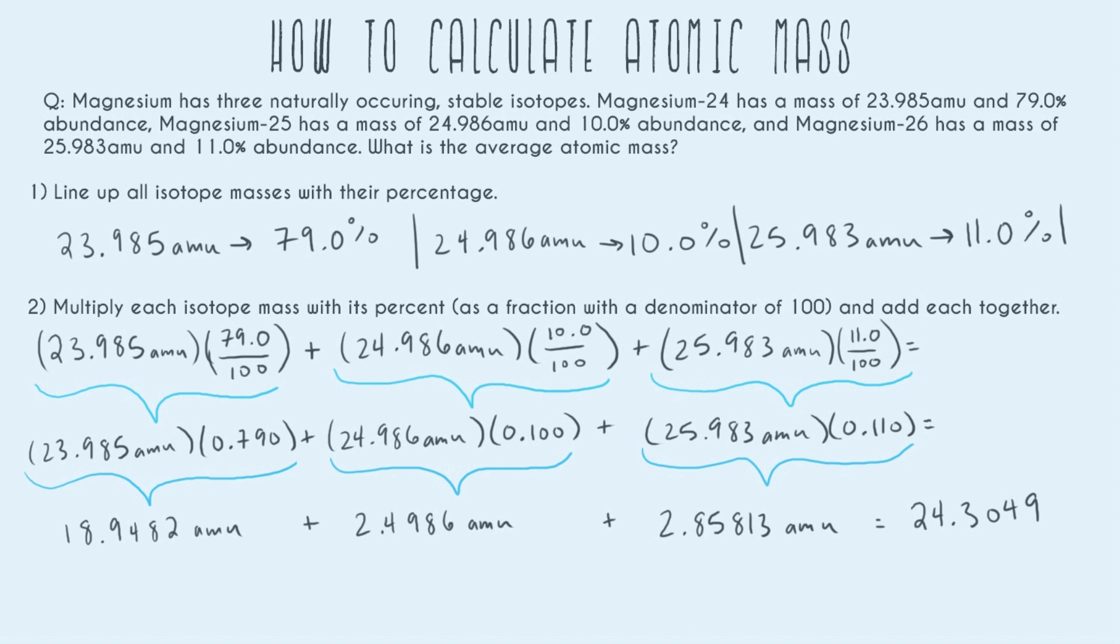I get 24.3049, and let's go ahead and do sig figs and also just kind of think about does our answer make sense before we get our final answer. So for sig figs, it's going to be everything we were given in the original question. So 1, 2, 3, 4, 5, 1, 2, 3, 1, 2, 3, 4, 5, 1, 2, 3, 1, 2, 3, 4, 5, 1, 2, 3. So three sig figs is our limitation. So we're going to be limited to 1, 2, 3. So our final answer is 24.3. Our unit is still AMU. And let's go ahead and just make sure this makes sense.